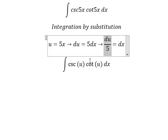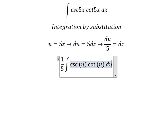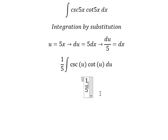Now we substitute dx with du over 5. The integral becomes one-fifth times the integral of csc(u) cot(u) du. This integrates to negative one-fifth csc(u) plus C.